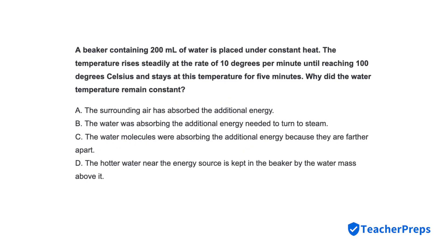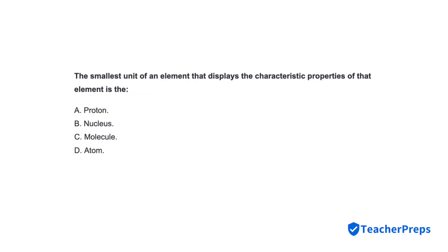A beaker containing 200 milliliters of water is placed under constant heat. The temperature rises steadily at the rate of 10 degrees per minute until reaching 100 degrees Celsius, and stays at this temperature for 5 minutes. Why did the water temperature remain constant? Correct response is letter B, the water was absorbing the additional energy needed to turn to steam.